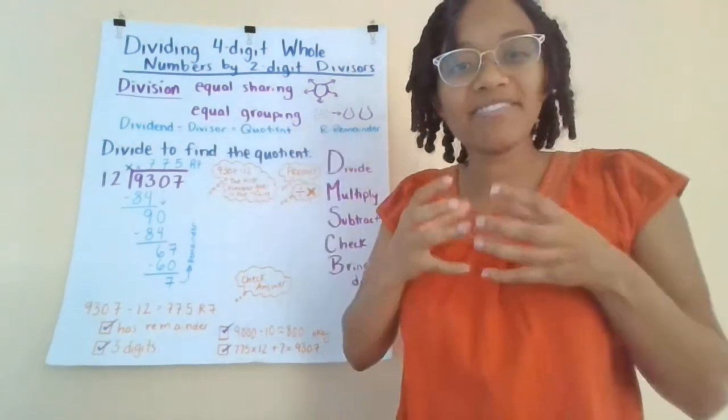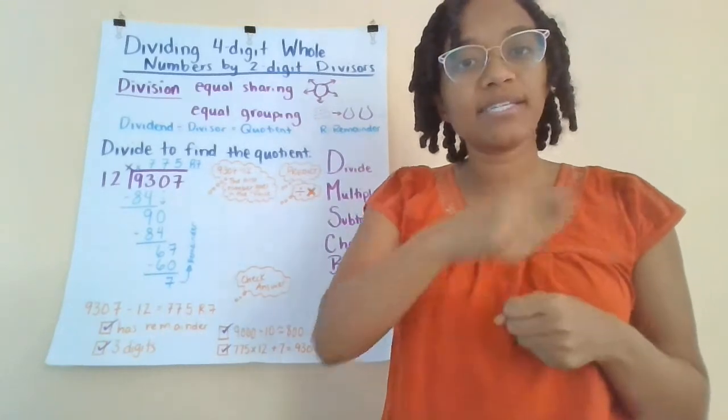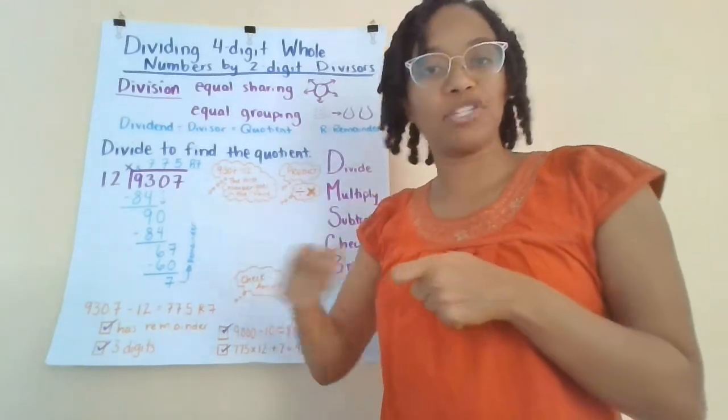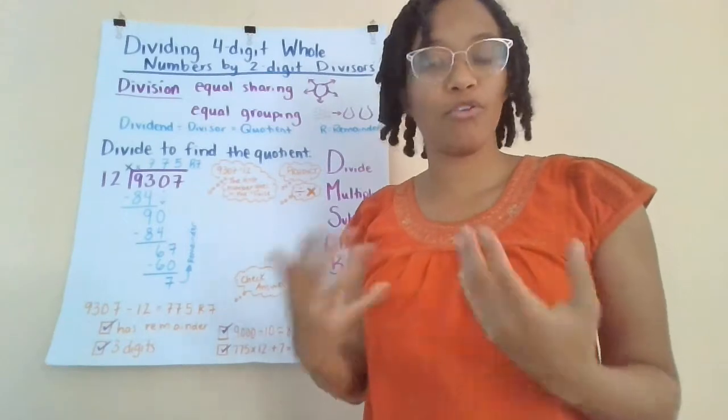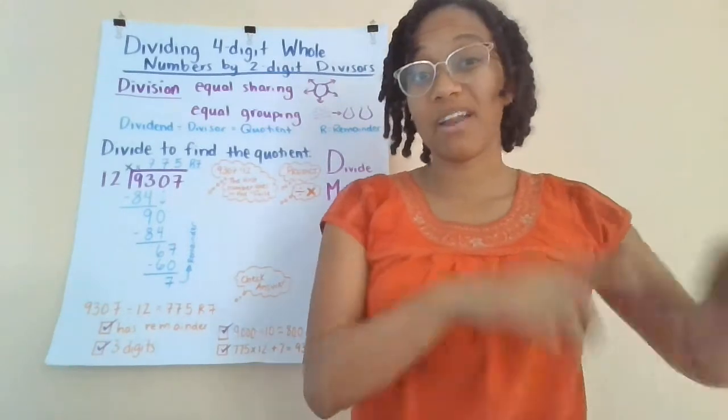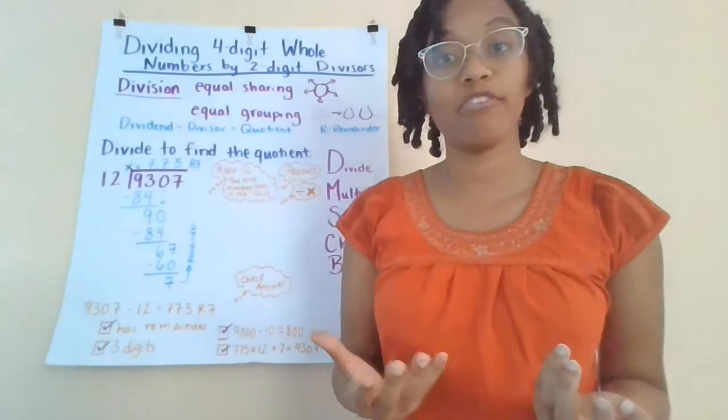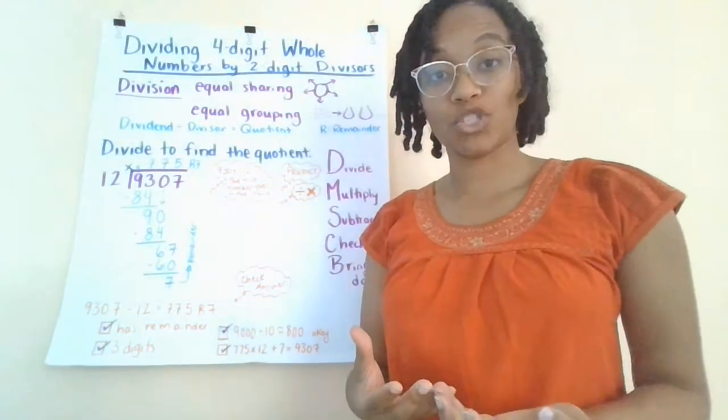Dividing can be equal sharing or equal grouping. Equal sharing is when we have some quantity and we need to divide it equally between a group of people or a group of entities. For example, I've got a bag of candy and I'm going to share it all equally with four of my friends. That's equal sharing.